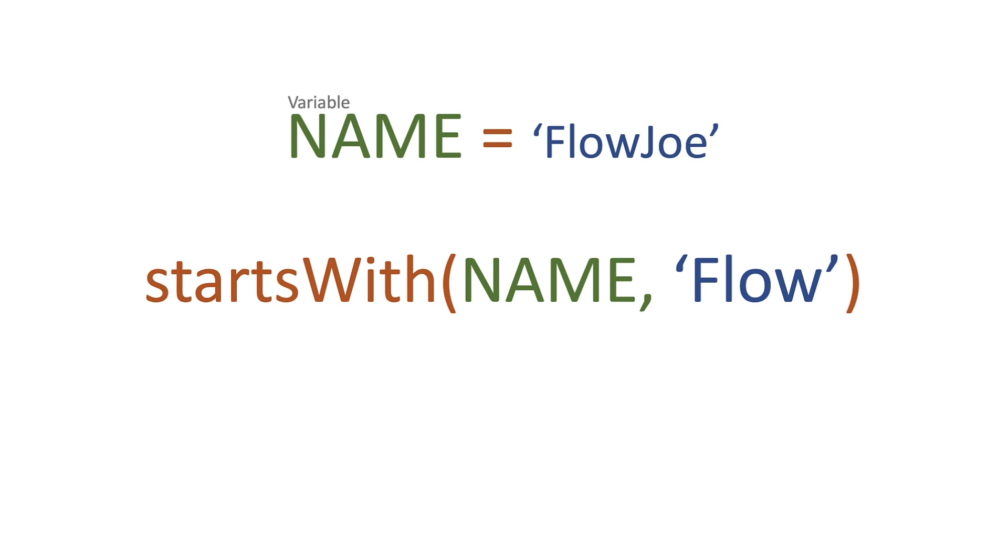Obviously we expect that to be true. As you can see, Flow is at the beginning, so that's what it's going to look for - that character in the string of NAME. It's going to return true, so we know that Flow is at the beginning of FlowJoe. Let's move on to endsWith.